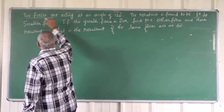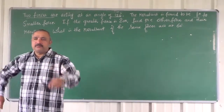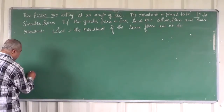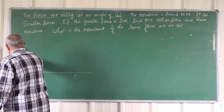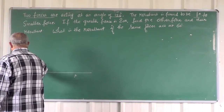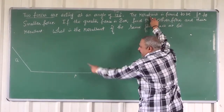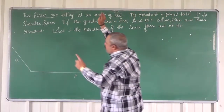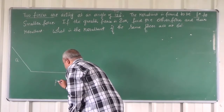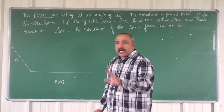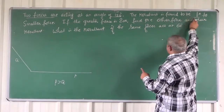There are two forces acting at an angle of 120 degrees. Let us name the forces P and Q. The angle between P and Q is 120 degrees. The resultant of P and Q is found to be perpendicular to the smaller force. Let us assume that P is the greater force, so Q is the smaller force, and the resultant is found to be perpendicular to Q.